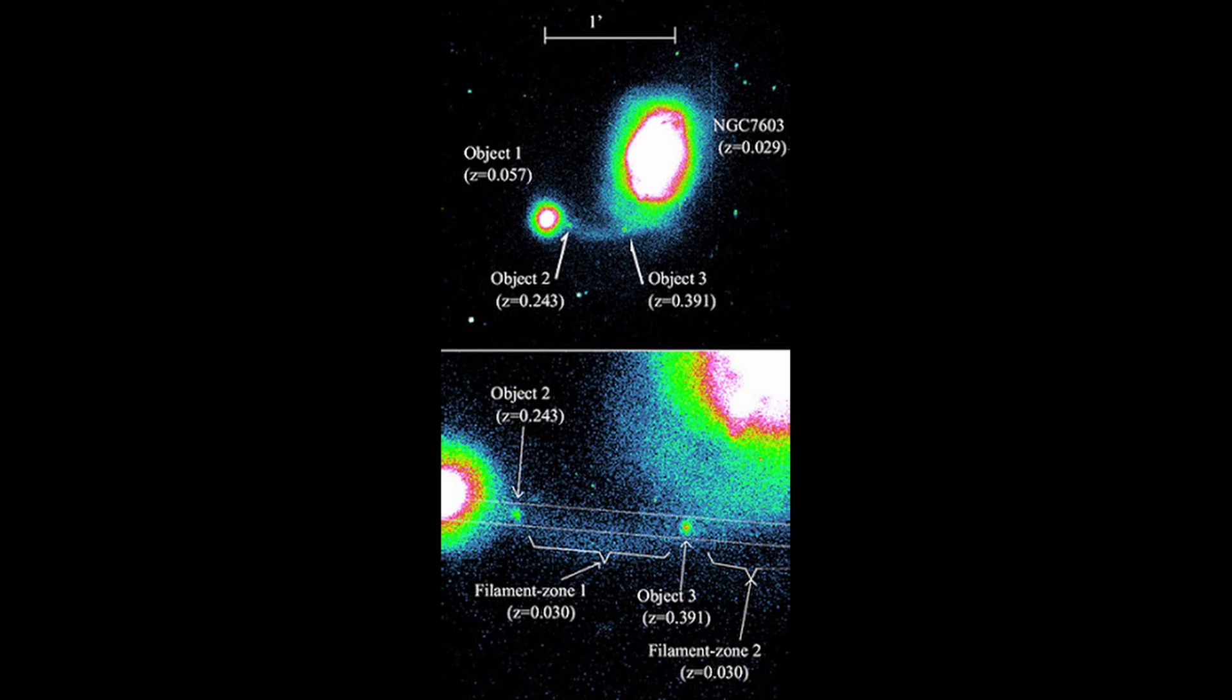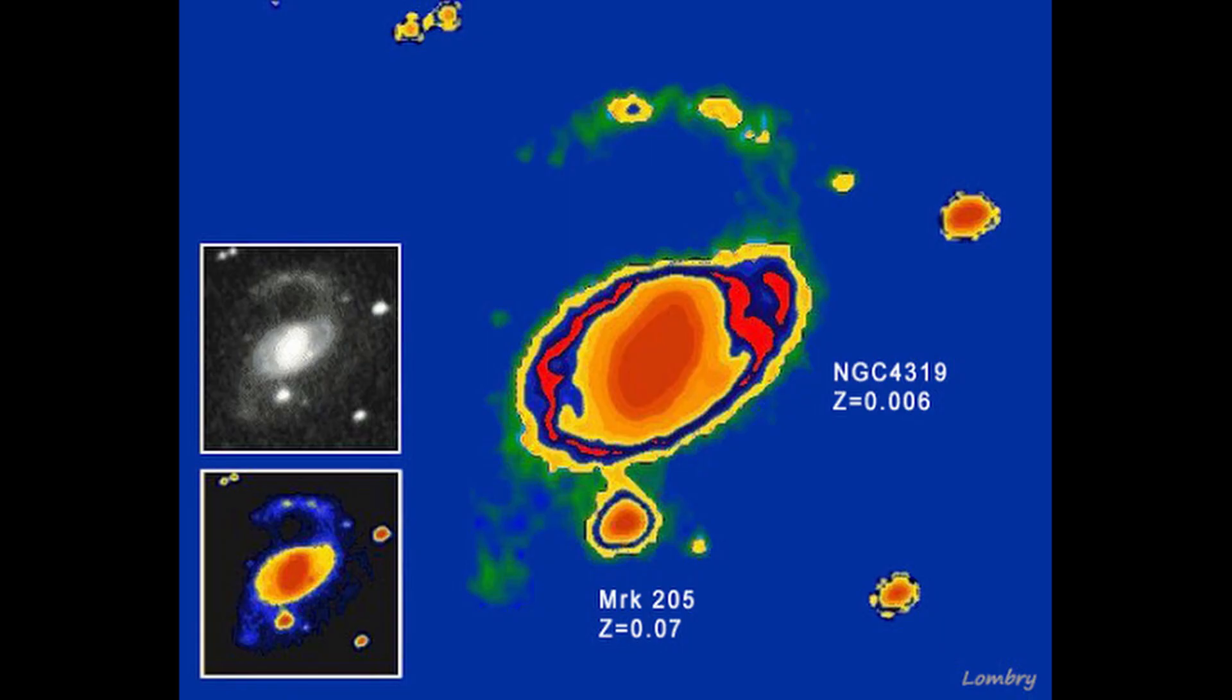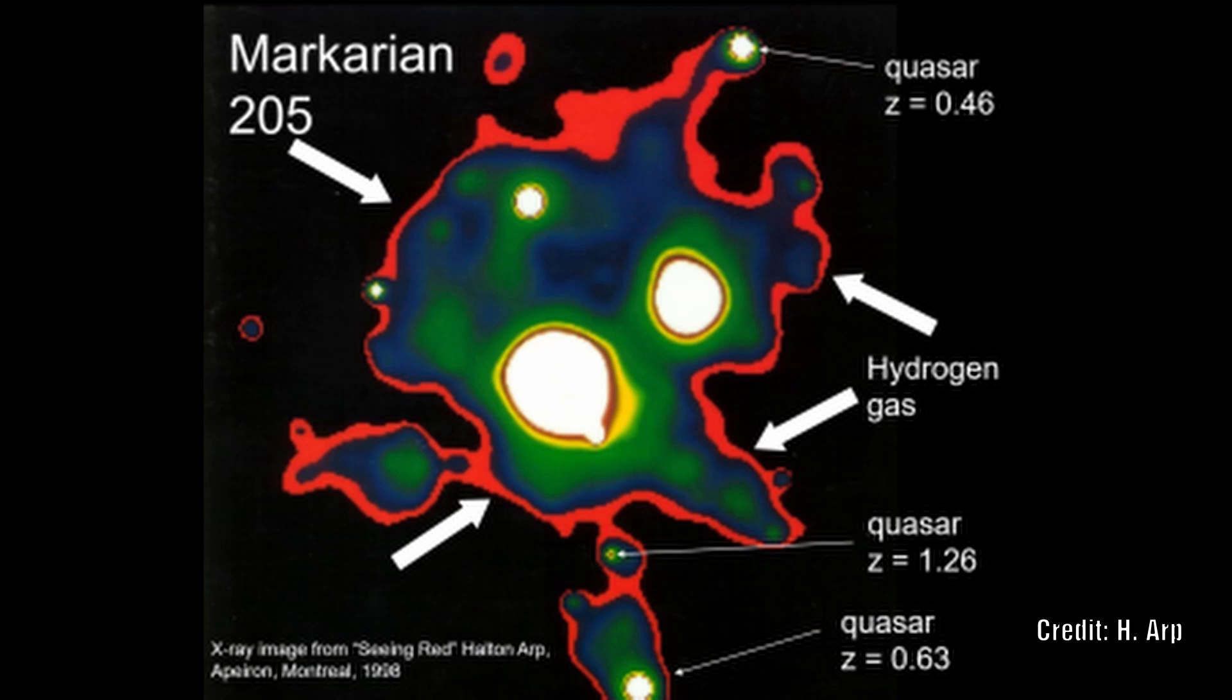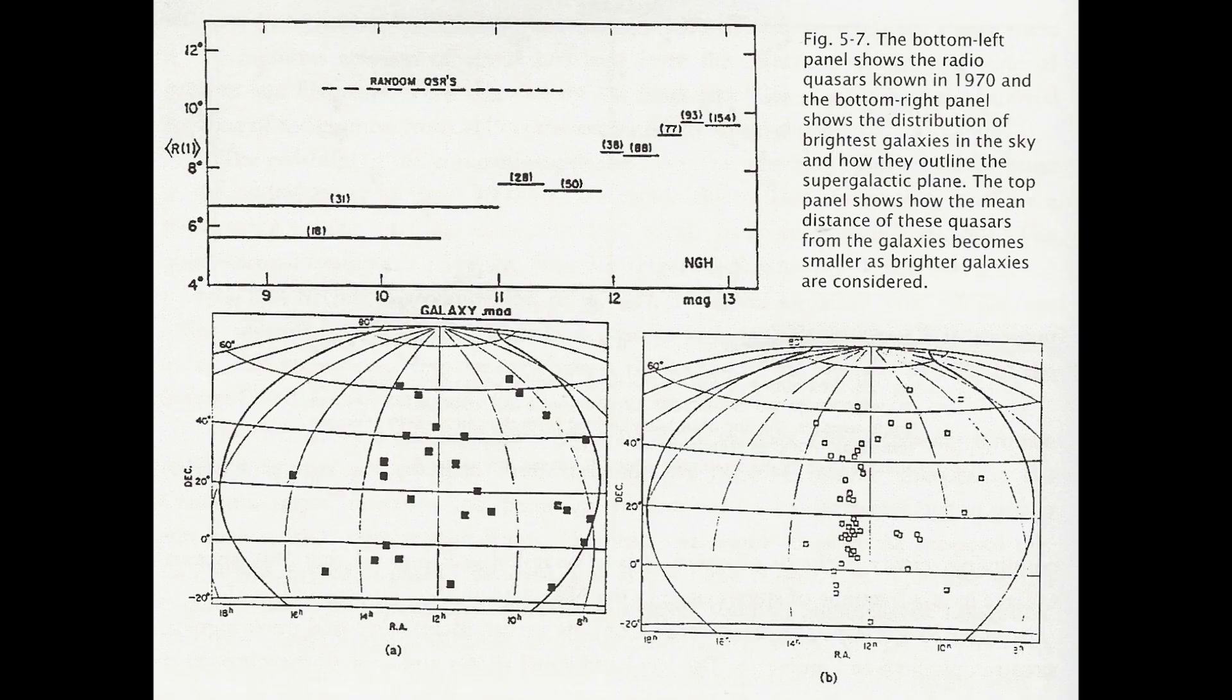Now in mainstream science these quasars are not thought to reside in the Virgo cluster due to their redshift. Now we have already seen some examples in part one where there was clear evidence of an association between the quasar and its host galaxy. In 1970 it was shown that in the northern hemisphere the brightest radio quasars were associated with the brightest galaxies, which we of course find in the Virgo cluster.